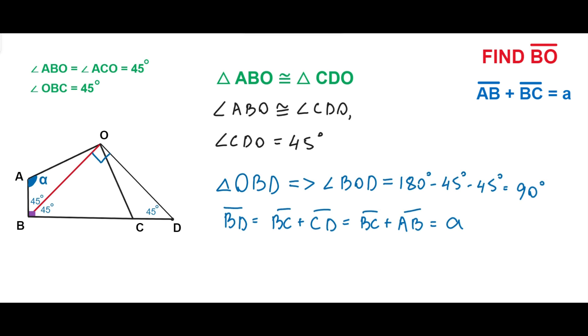In the isosceles right triangle OBD, we can calculate the segment BO by multiplying the hypotenuse BD by cosine 45 degrees. The segment BO equals BD times cosine 45 degrees, which equals A times square root 2 divided by 2, which equals A divided by square root 2.